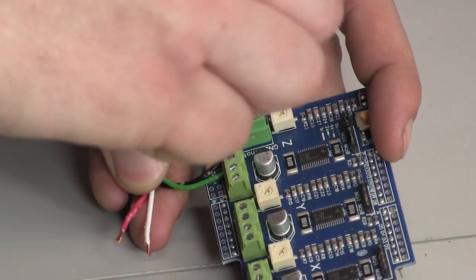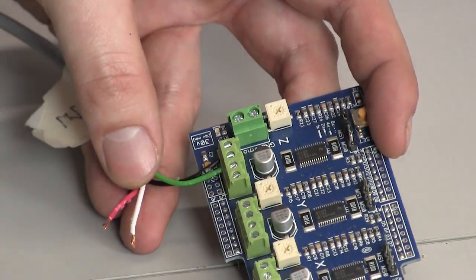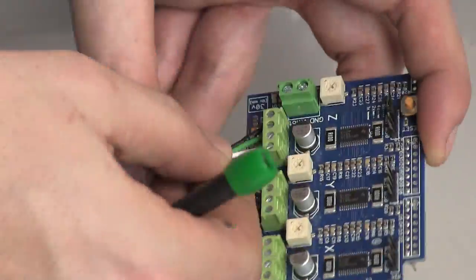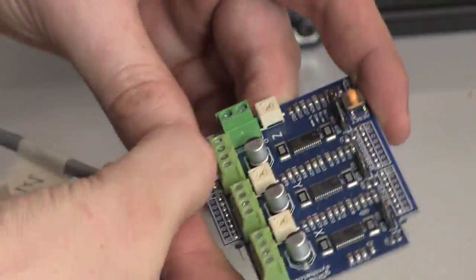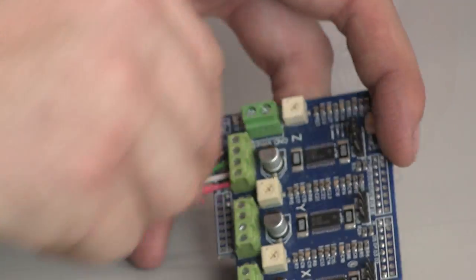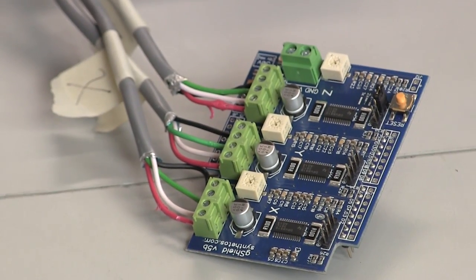The G-Shield is marked which motor belongs to which terminal block. So match the stepper cable for the Z to the terminal block labeled Z on the G-Shield. Y to Y and X to X. When you're done it should look like this.